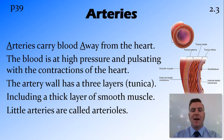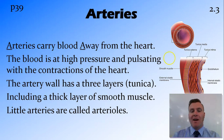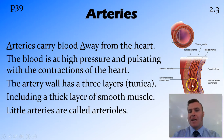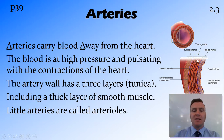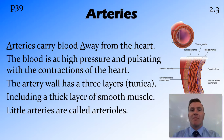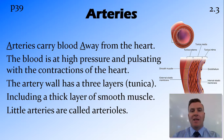Most blood vessels have three layers, referred to as tunica. The important thing about arteries is that they have a thick layer of smooth muscle in the center layer — the tunica media. This is so that they can deal with that high pressure blood that comes from the heart, as well as keep the pressure on it so that it can be squeezed around the body. These arteries then divide into smaller arteries called arterioles.